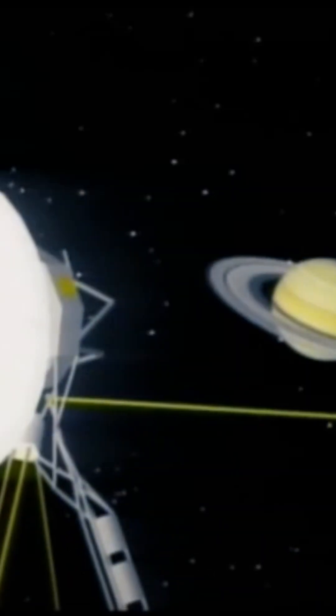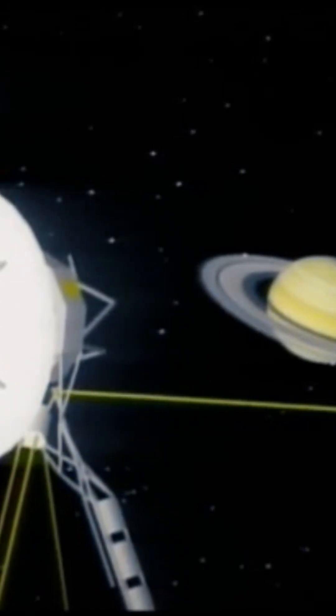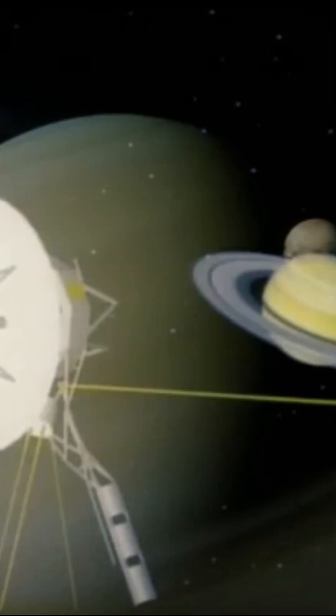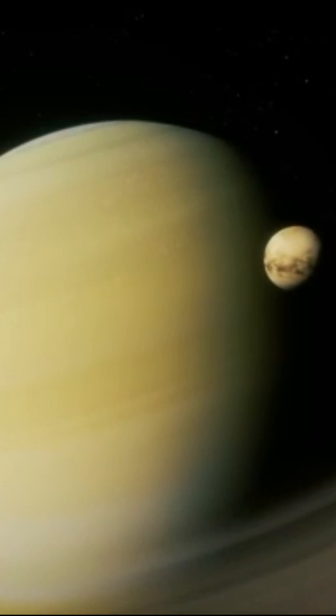Voyager 1 was the first to approach Saturn in November 1980. It first flew over Titan at 6,490 kilometers, or 4,000 miles, then Tethys and Saturn on November 12.